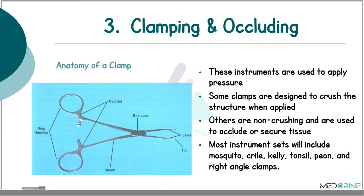The third classification is clamping and occluding. These instruments are used to apply pressure. Some clamps are designed to crush the structure when applied and others are non-crushing; therefore they can be used to occlude or secure tissue. Most instrument sets will include examples such as mosquito forceps, Crile forceps, Kelly forceps, tonsil forceps, Pean and right-angled clamps.